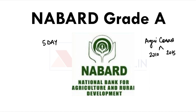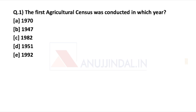Let's begin with the first question. There is also a question at the end of the video, so do watch till the end and answer that question in the comment section. The first question is: the first agriculture census was conducted in which year? The agriculture ministry conducts this census every 5 years, and it has been conducted since 1970.